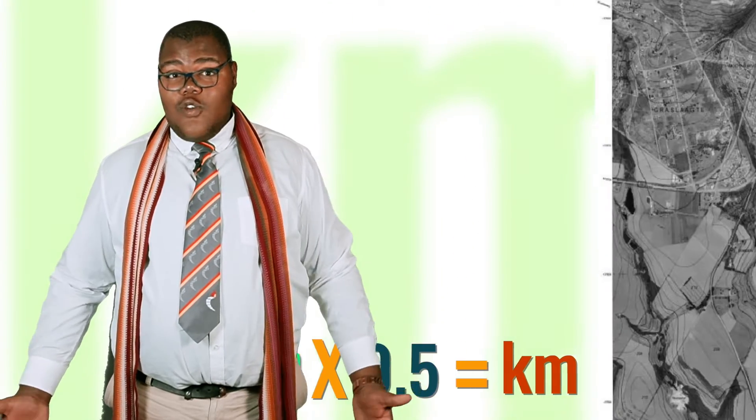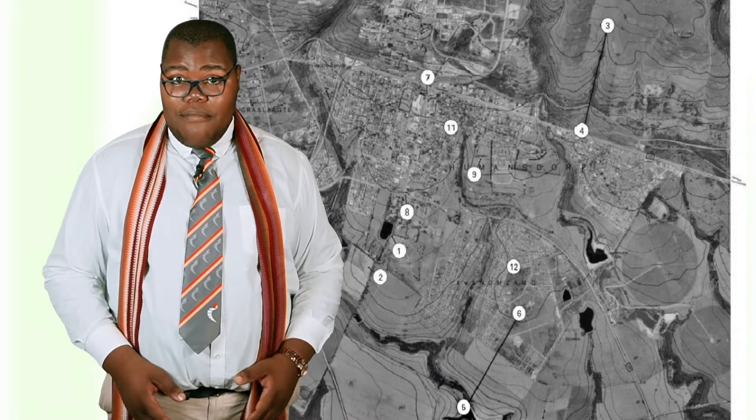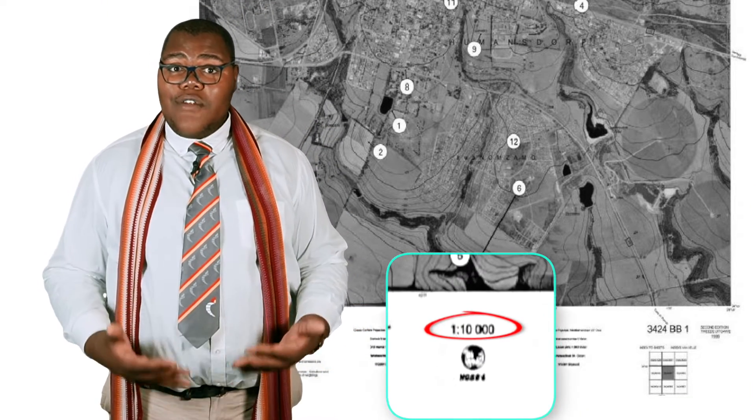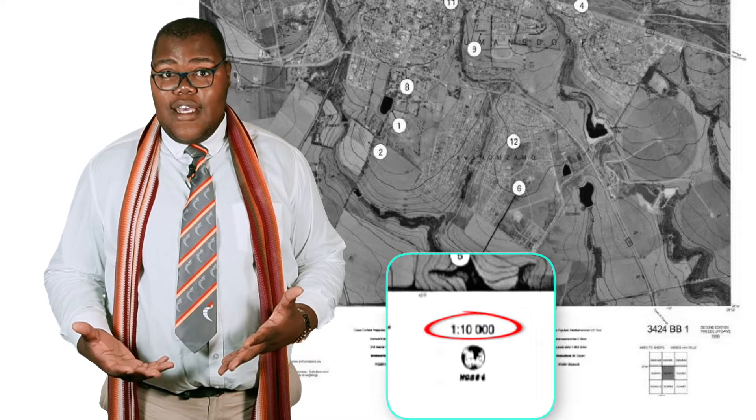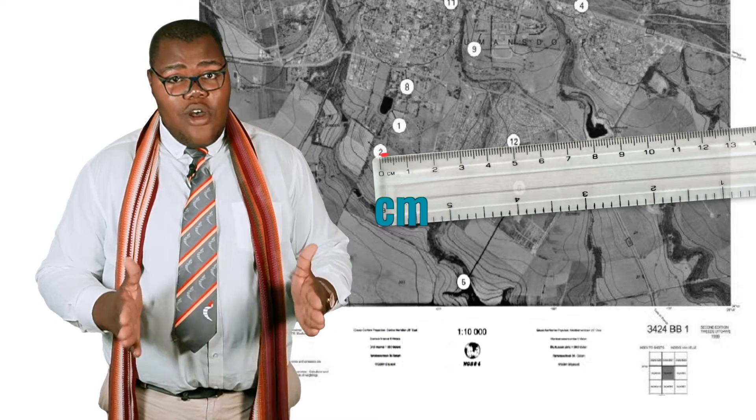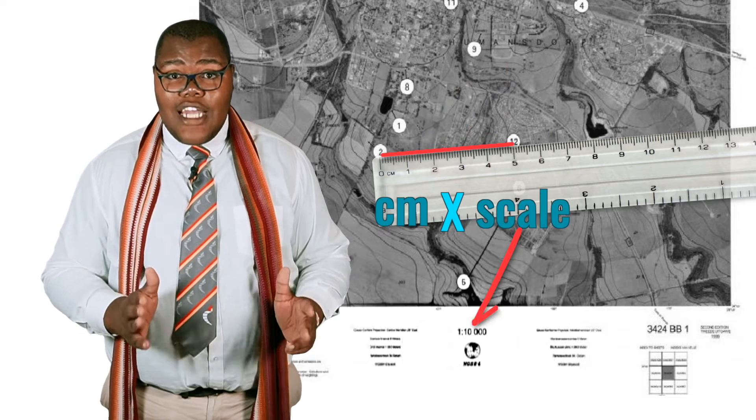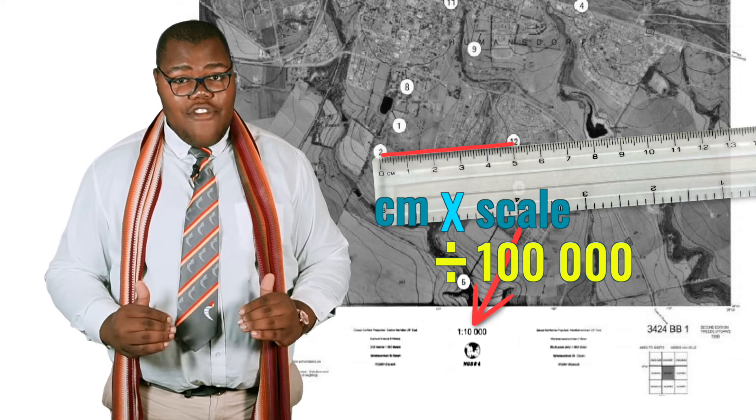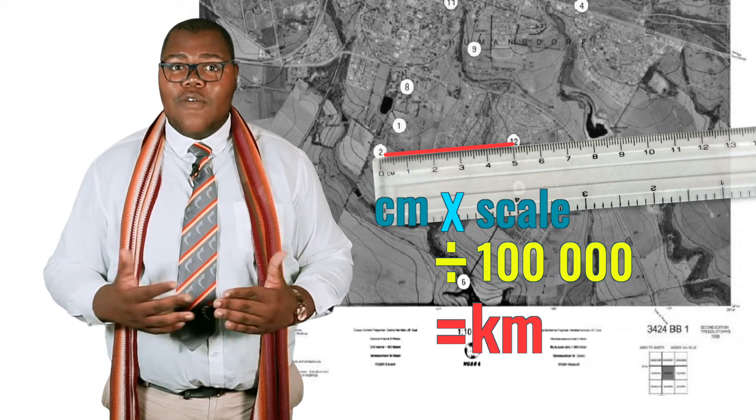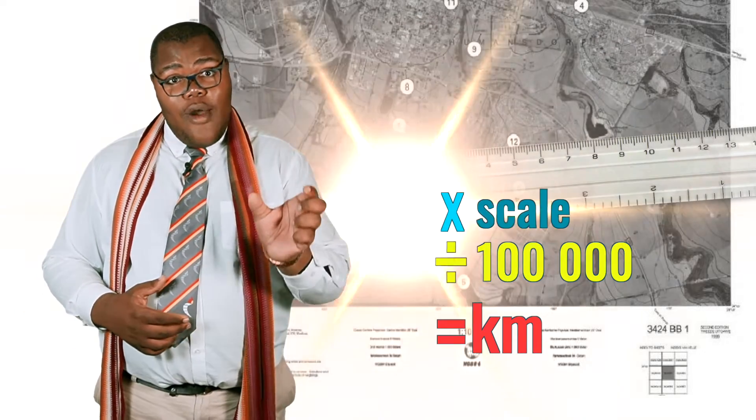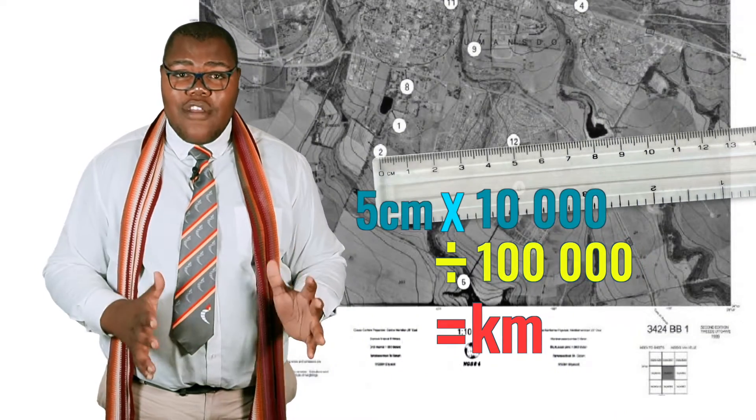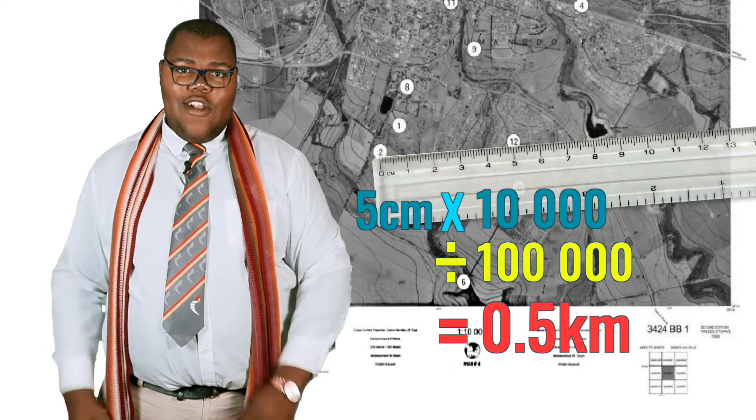And if you happen to work with a map that is not a topographic map, that has a different scale, like an orthophoto. An orthophoto has 1 is to 10,000 as its scale. What you need to do is to measure in centimetres on the map, multiply that by the scale, divide that by 100,000 to give you an answer in kilometres. So, in the example of an orthophoto, it would be, however many centimetres on the map, multiplied by 10,000 divided by 100,000 to give you the answer in kilometres.